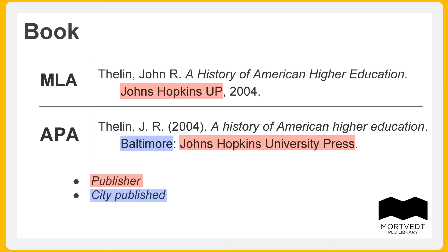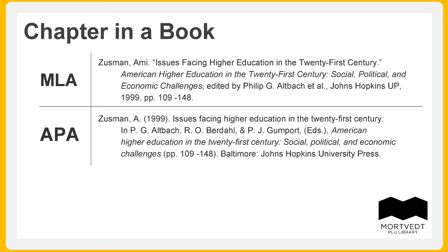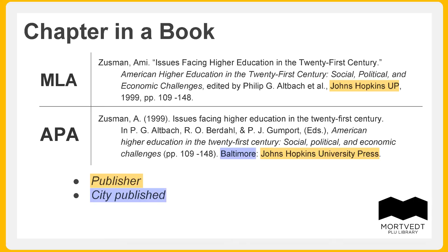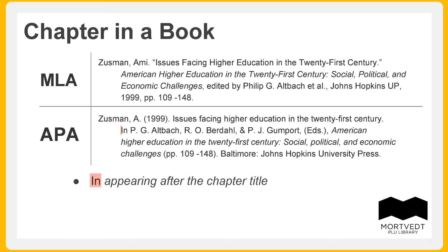Some books are collections of chapters on a particular theme or topic. If the person citing this type of source only uses a single chapter, the citation will reflect that. Like other books, a chapter from an anthology will list the city of publication and the publisher. There will also be some unique elements. One clue is the word 'in,' which will follow the title of the chapter and come sometime before the title of the book. Another clue is the word 'editor,' 'edited by,' or the abbreviation 'ed.'